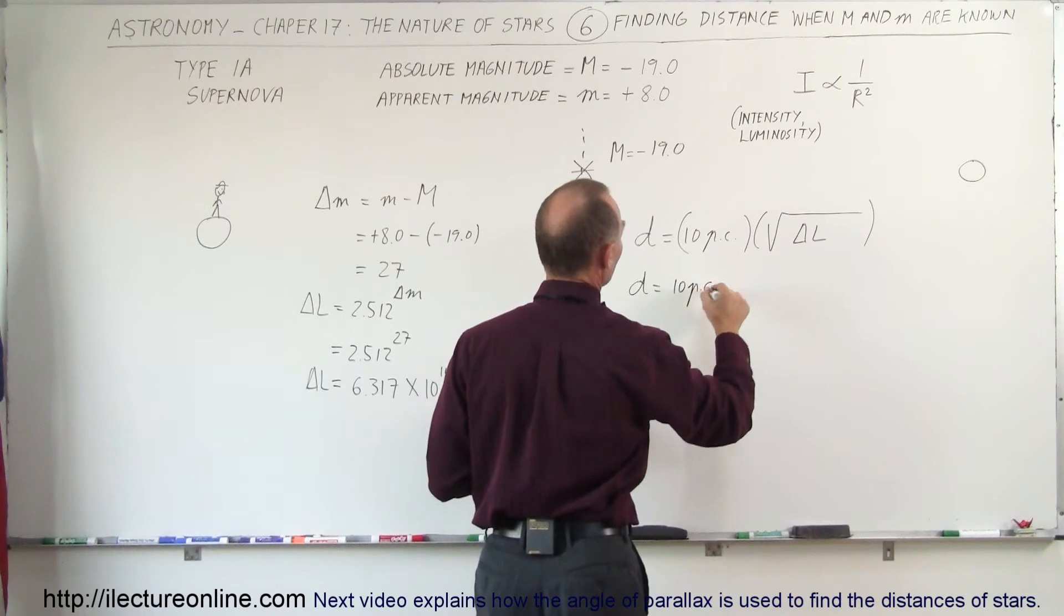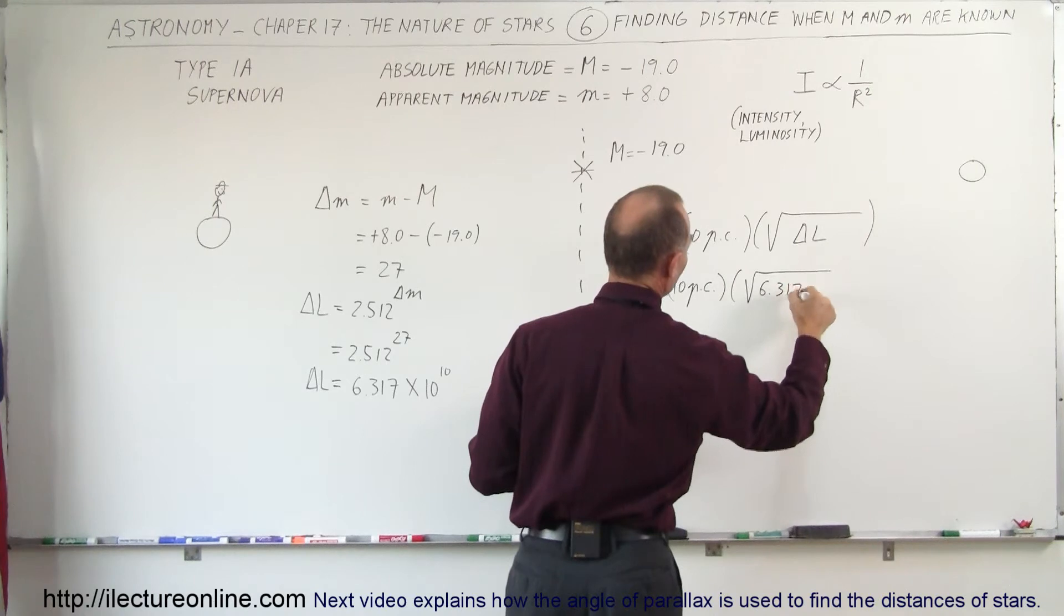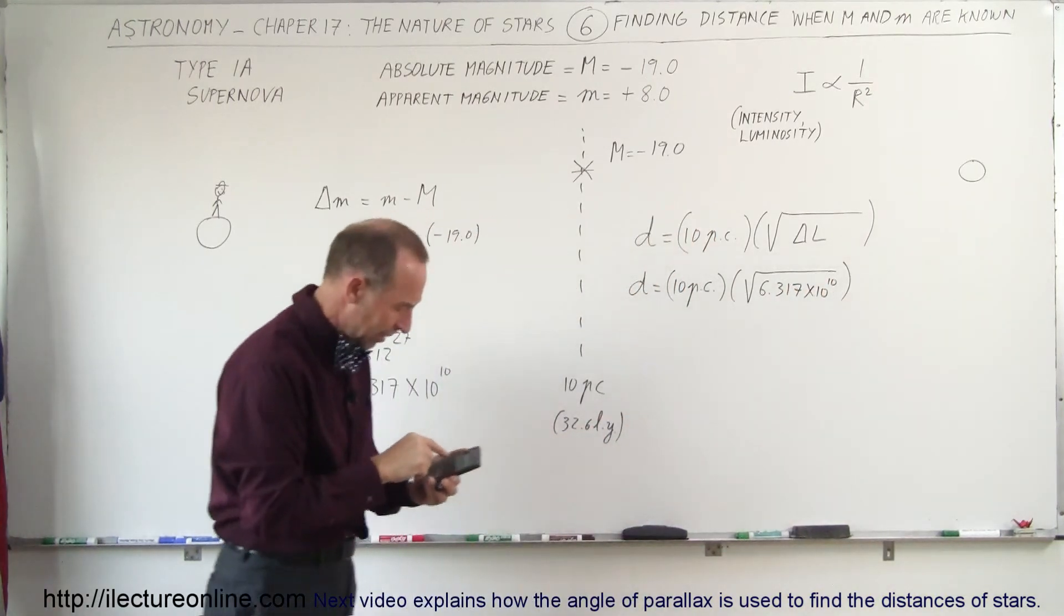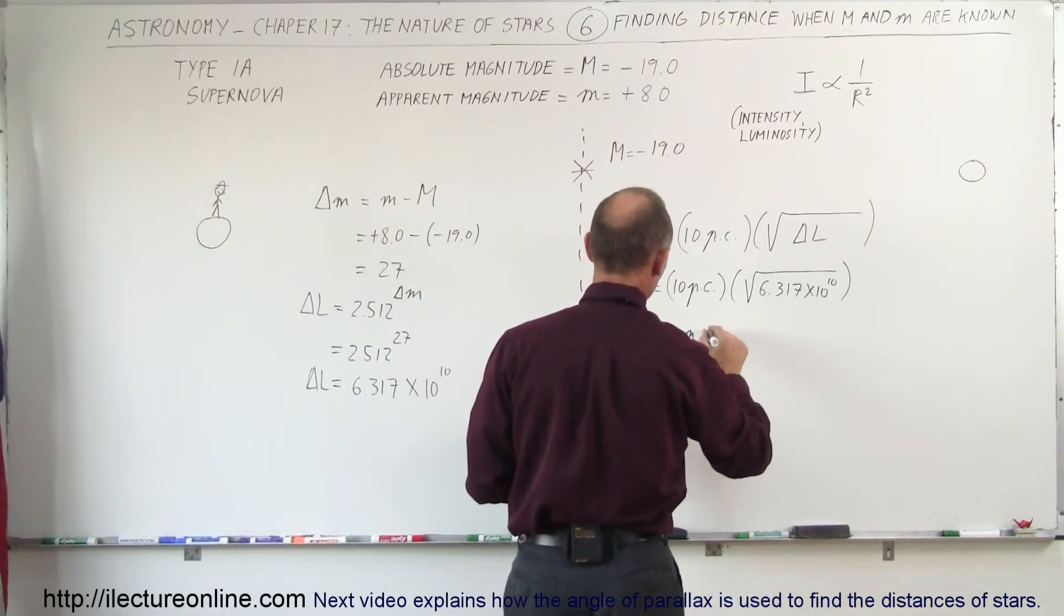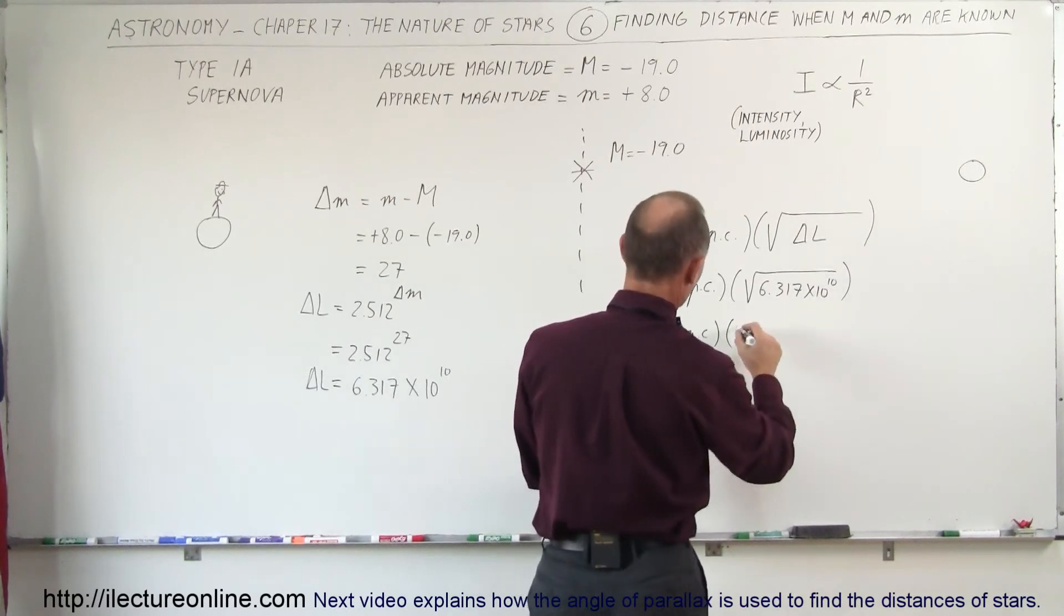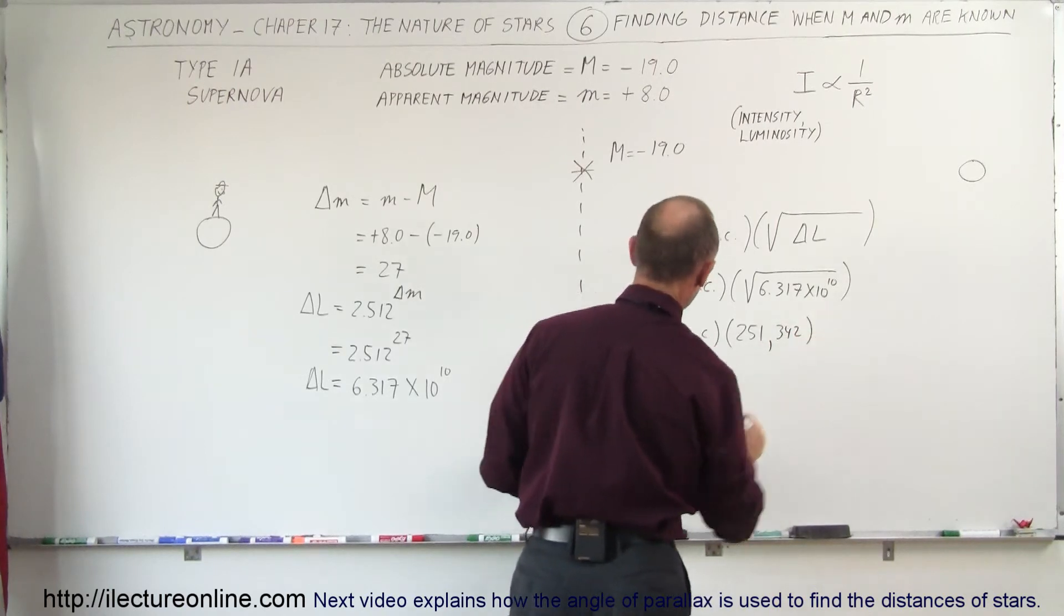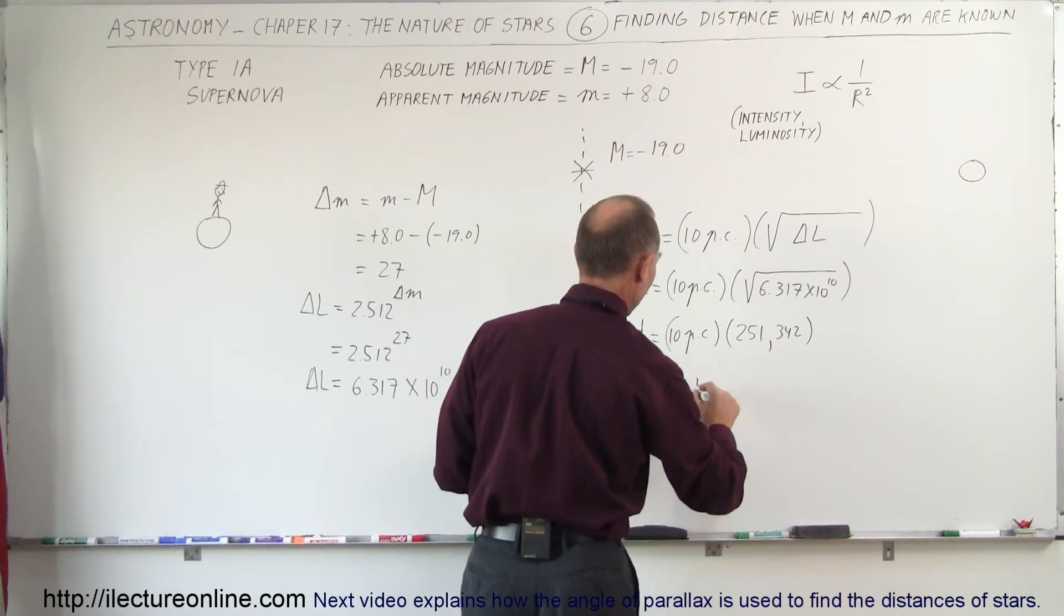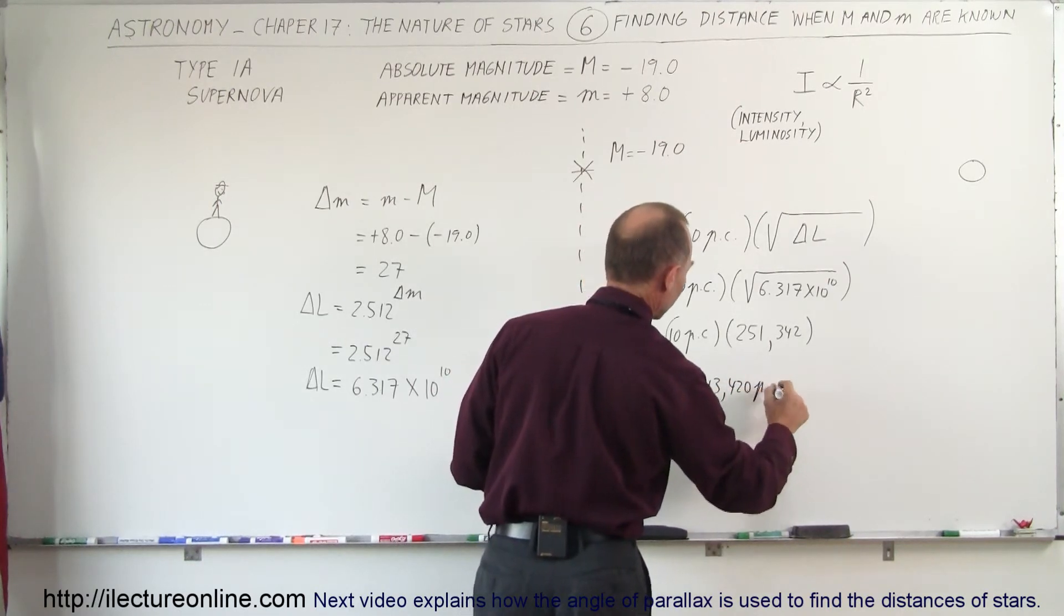Now let's plug the number in. So the distance is equal to 10 parsecs times the square root of 6.317 times 10 to the 10th. Let's take the square root of that. And that distance would be equal to 10 parsecs times 251,342, and so therefore the distance would be equal to 2,513,420 parsecs.